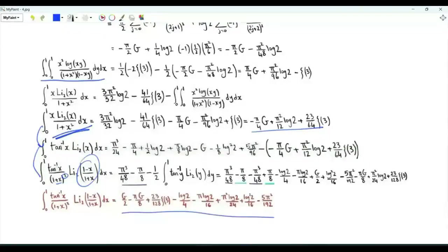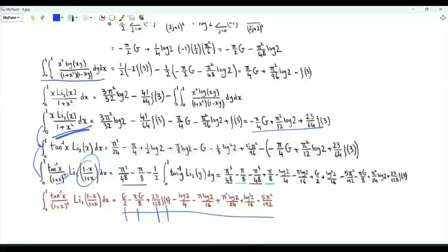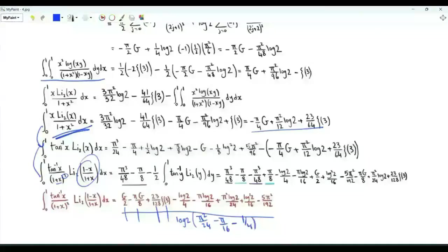Then proceeding to the main integral of interest — the integral from 0 to 1 of the inverse tangent of x times the dilogarithm of (1 minus x) over (1 plus x), all over (1 plus x squared) — its value has eight terms: G over 2 minus pi G over 8 plus 23 zeta(3) over 128, then log 2 multiplied by (pi² over 24 minus pi over 16 minus 1 over 4), plus log²2 over 16 minus 5pi² over 192.